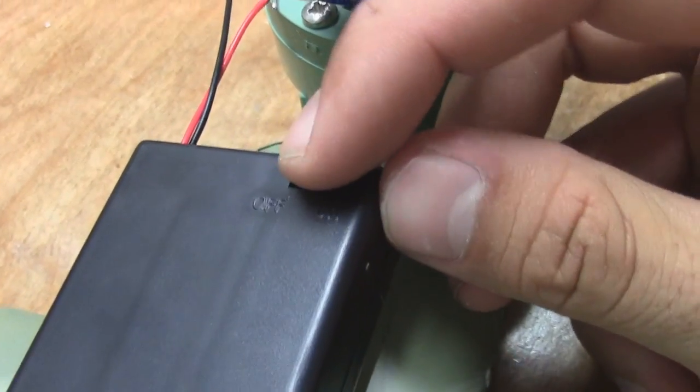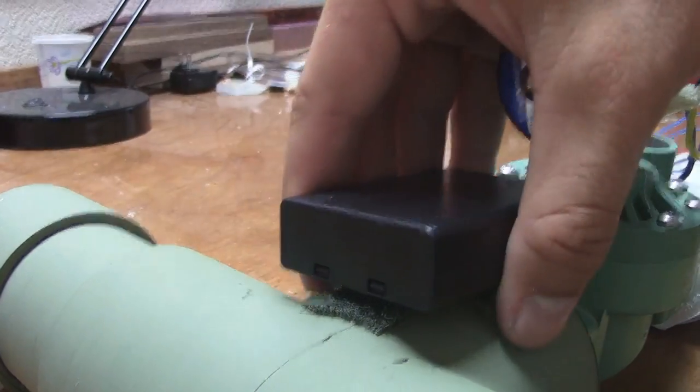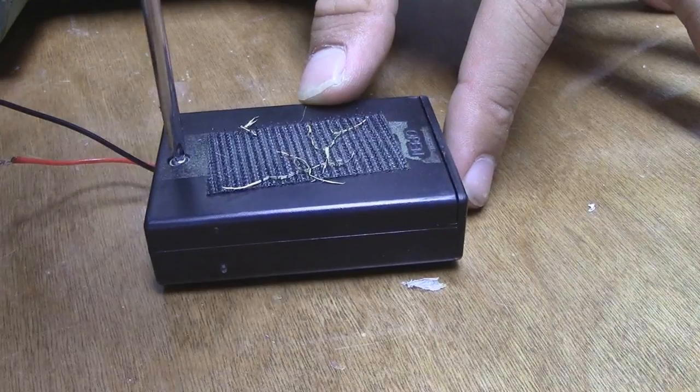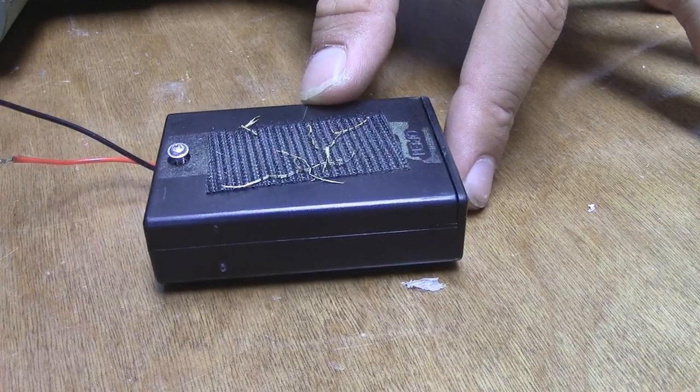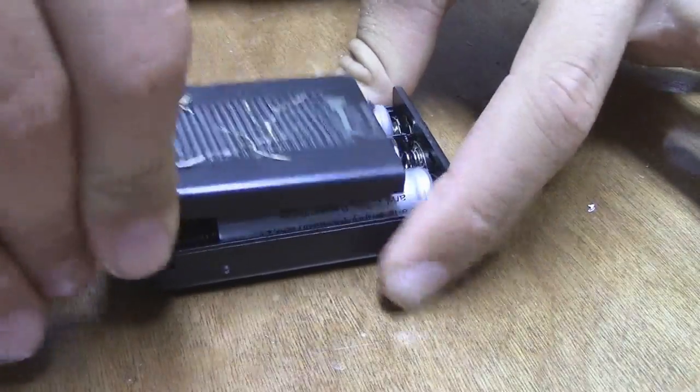The battery pack has an on off switch which is used as the master switch and is connected with velcro. The battery pack is made for three AA batteries but to get close to the 12 volts we need we are using three 3.7 volt Trustfire batteries.